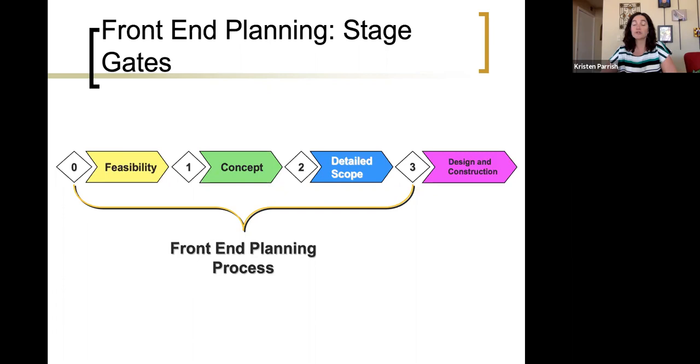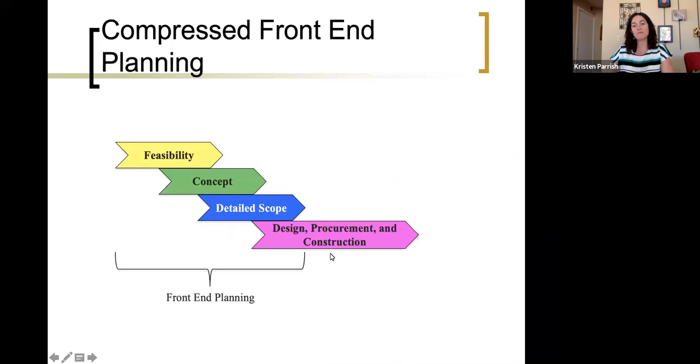So front-end planning was originally conceptualized as part of a gated process. So you go from feasibility studies through a stage gate into concept through another stage gate into detailed scoping through a final stage gate, and then into design and construction.